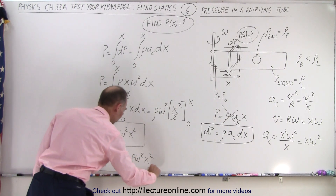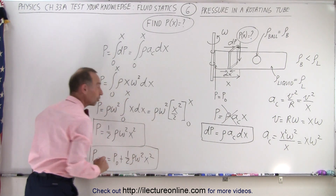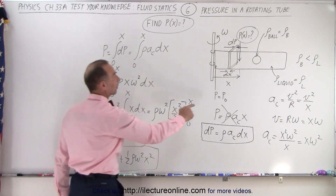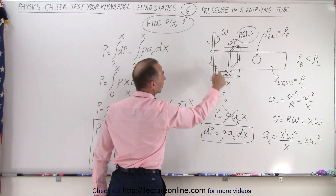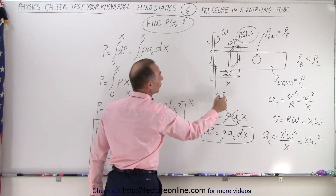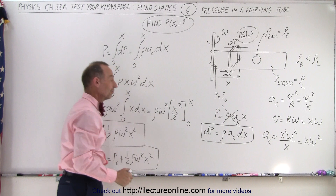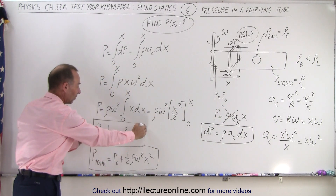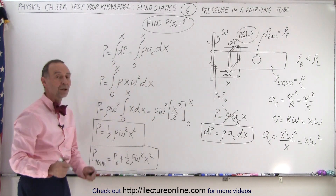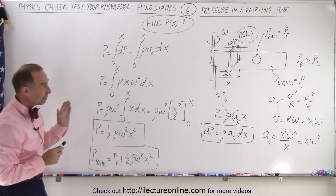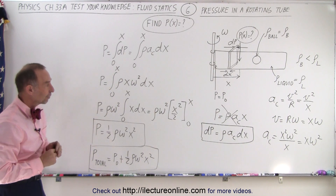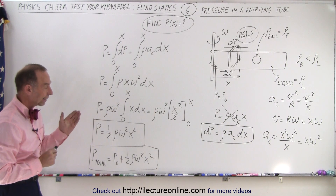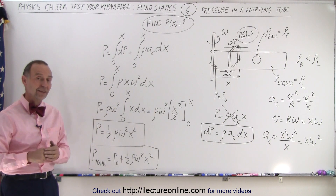That is the total pressure at any point away from the axis of rotation. If the initial pressure P-naught is equal to zero, then that term disappears. And that is how the pressure distribution in a rotating tube filled with liquid is derived.